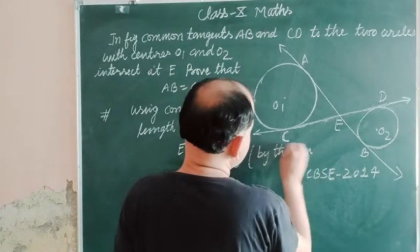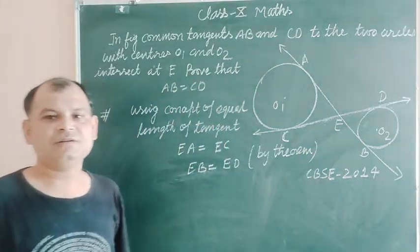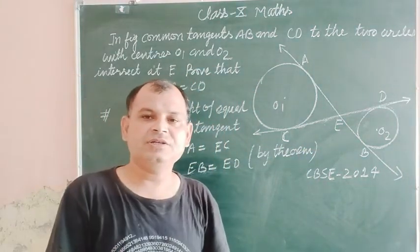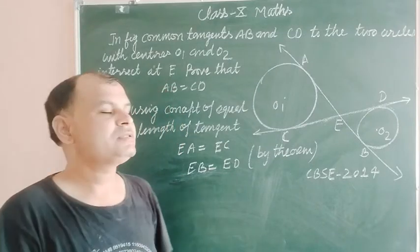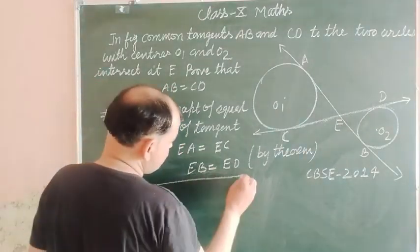We take this by the theorem that tangents drawn from an external point to a circle are equal. Now we add these two equations.